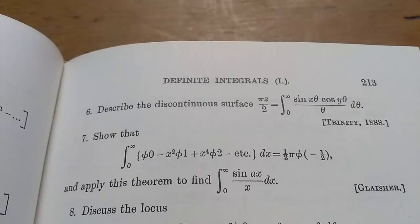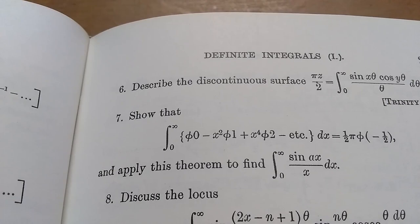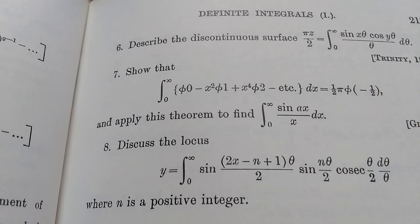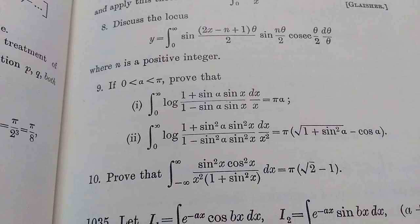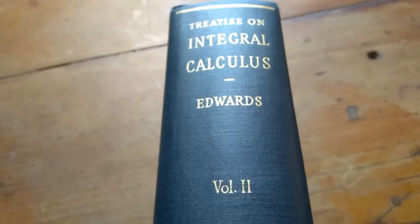Here's another glimpse. So you see it. This is really exciting. Describe the discontinuous surface. Trinity, 1888. That is so awesome. I mean, just wow. What a hardcore book. And this is just a calculus book. It doesn't even say advanced calculus. Instead, it's a treatise on integral calculus.